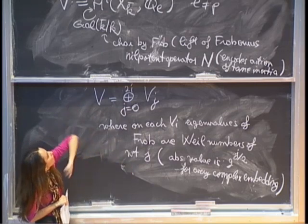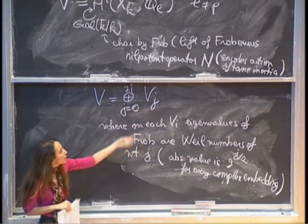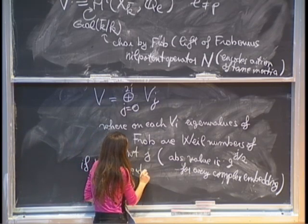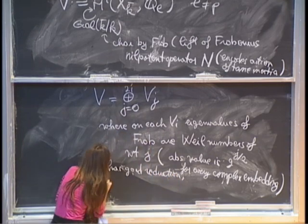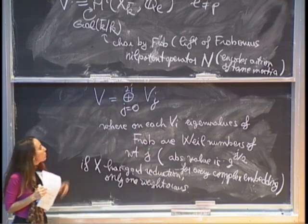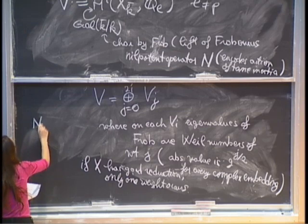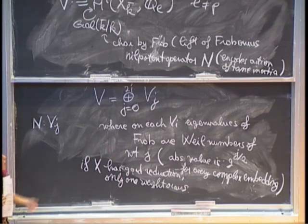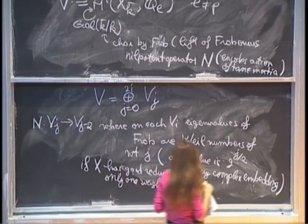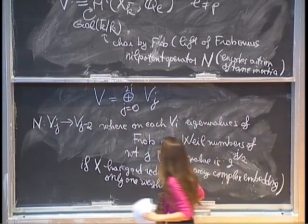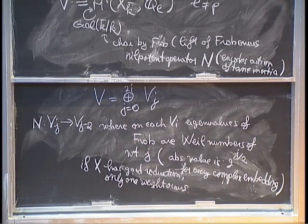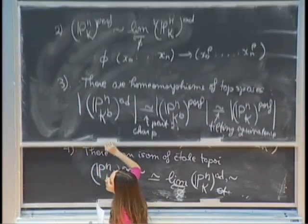If the variety has smooth reduction, then from the Weil conjectures we know that only one weight can occur. If x has good reduction, that forces the monodromy operator to be 0. The monodromy operator, obtained as a logarithm of tame inertia, satisfies a compatibility with Frobenius and sends V_j to V_{j-2}, decreasing the weight by 2. Without good reduction, more than one weight can occur, and the weight monodromy conjecture says these weights are connected by the monodromy operator — the monodromy operator is as large as it can be.